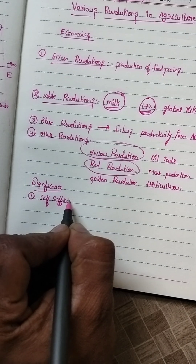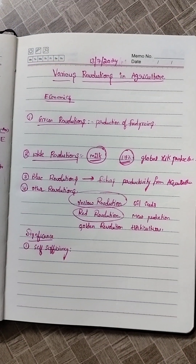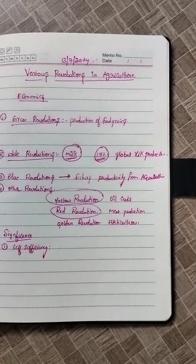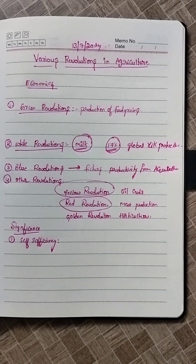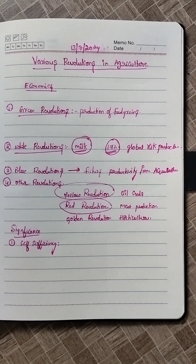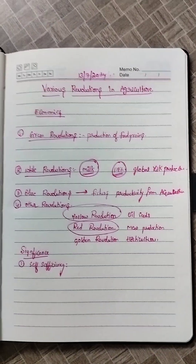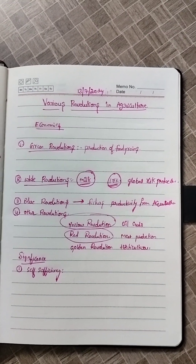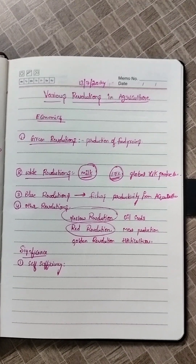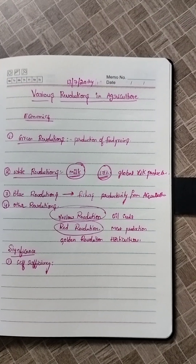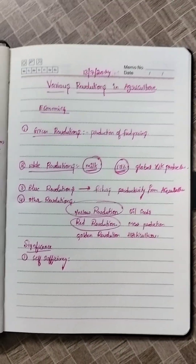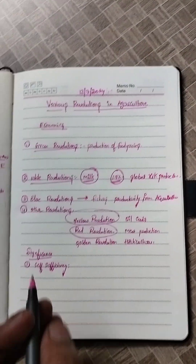Self-sufficiency means India became self-sufficient in food grain production with the help of the Green Revolution, by implementing high-yielding variety seeds, fertilizers, and pesticides. Milk production also improved through the introduction of new breed technology, high-quality fodder, and improvements in veterinary facilities, contributing to self-sufficiency.